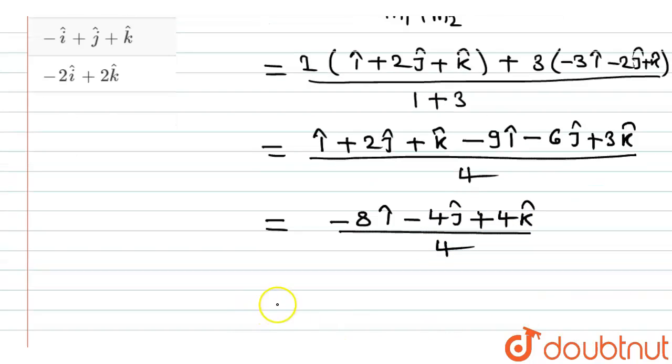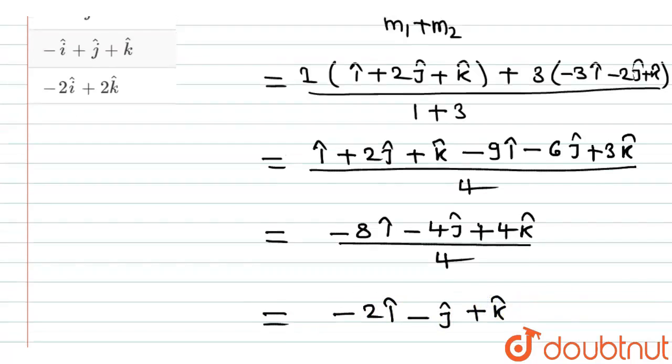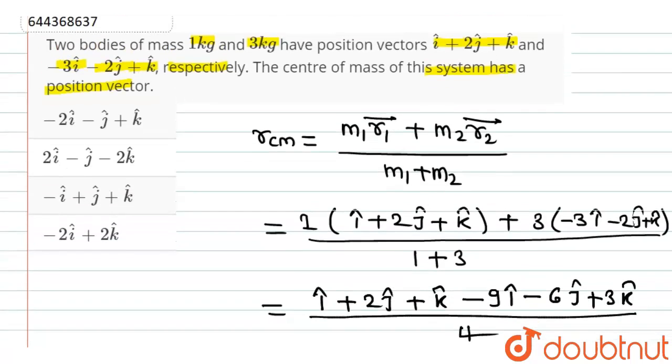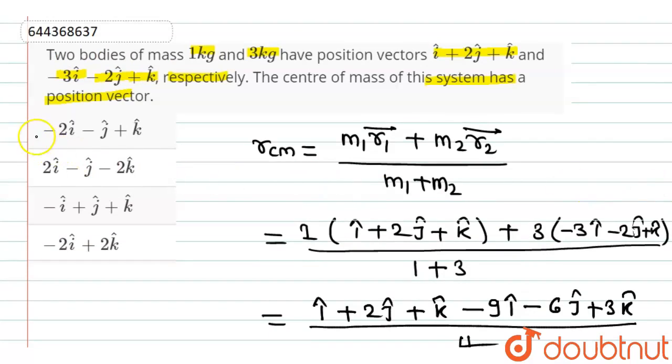Now dividing by 4, it will be minus 2 i cap minus j cap plus k cap. Therefore, the correct answer for our question is option number 1: minus 2 i cap minus j cap plus k cap will be the correct answer. Thank you.